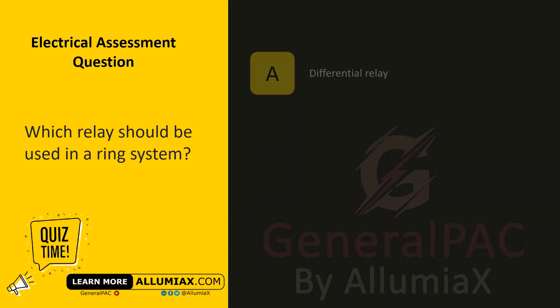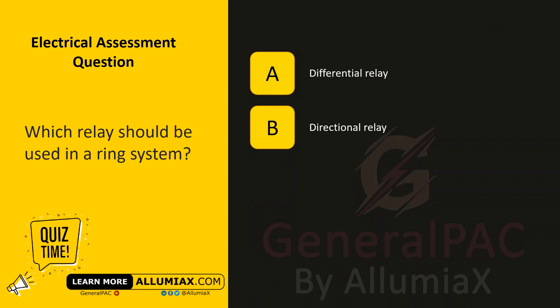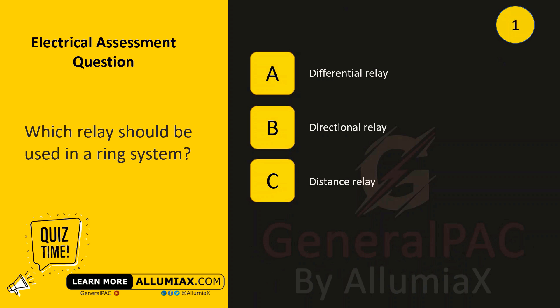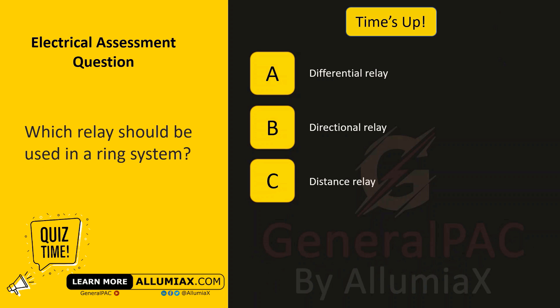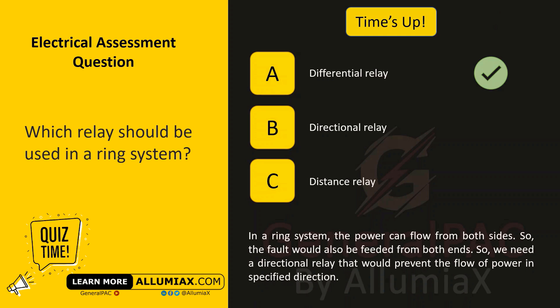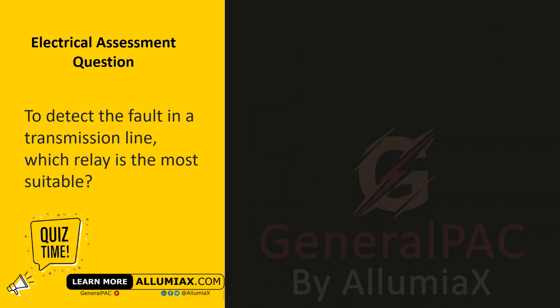Which relay should be used in a ring system? A: differential relay, B: directional relay, C: distance relay. The answer is B — directional relay. In a ring system, power can flow from both sides, so the fault would also be fed from both ends. We need a directional relay that would prevent the flow of power in a specified direction.